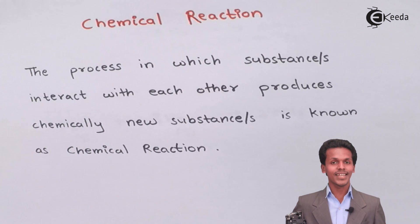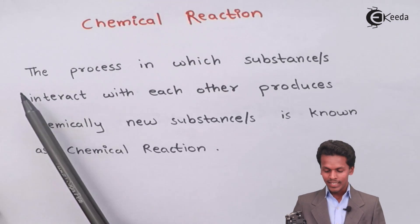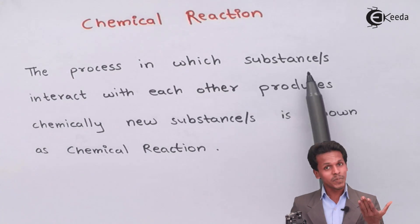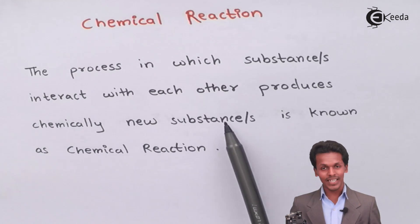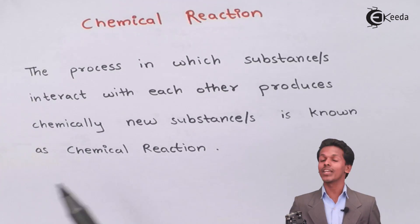Now talking about chemical reaction, chemical reaction means the process in which substances interact with each other so as to produce chemically a new substance or substances. This is known as a chemical reaction.